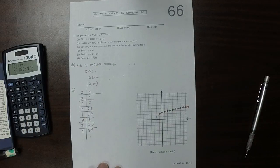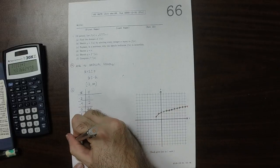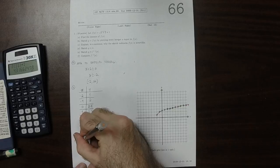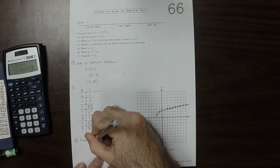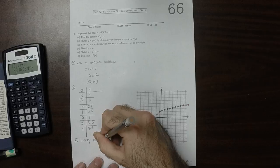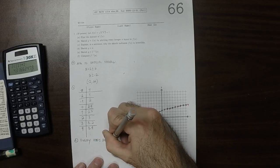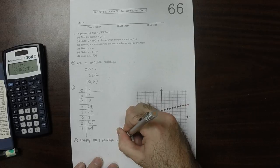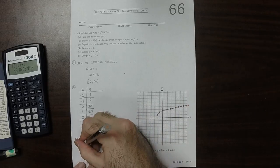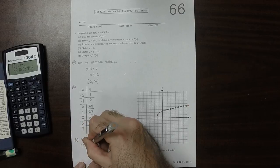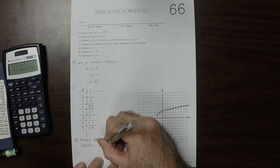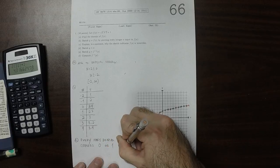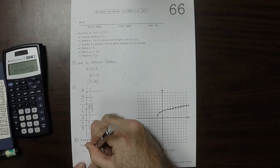So C, explain it in a sentence. So every horizontal line crosses the graph 0 or 1 times, and therefore it passes the horizontal line test.